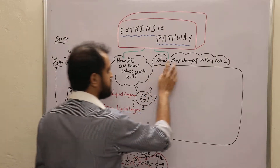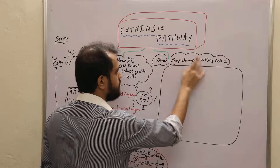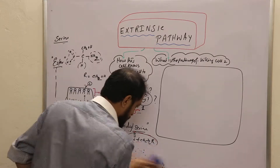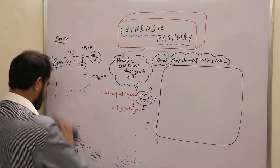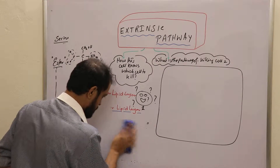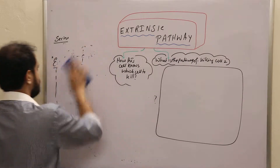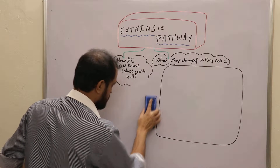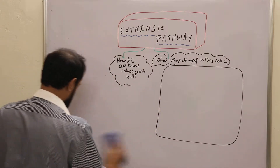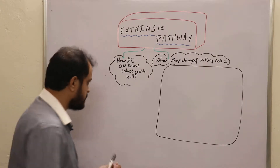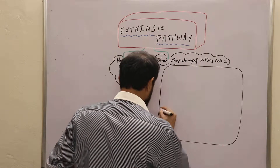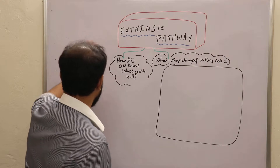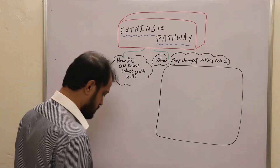Now we will discuss the second part, that is what is the pathway of killing cell number 2. So let us talk about the pathway of killing cell number 2. You should always remember that in the extrinsic pathway, the signaling comes from outside.